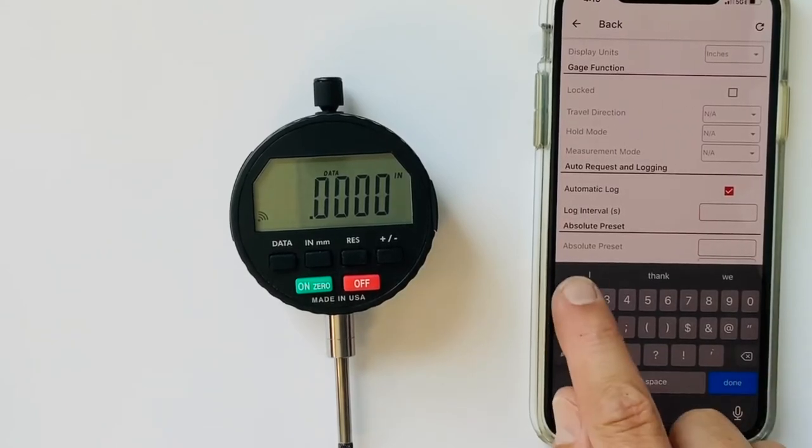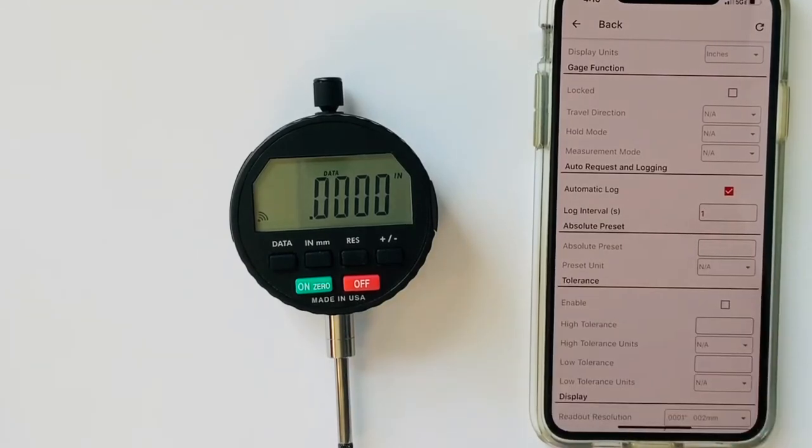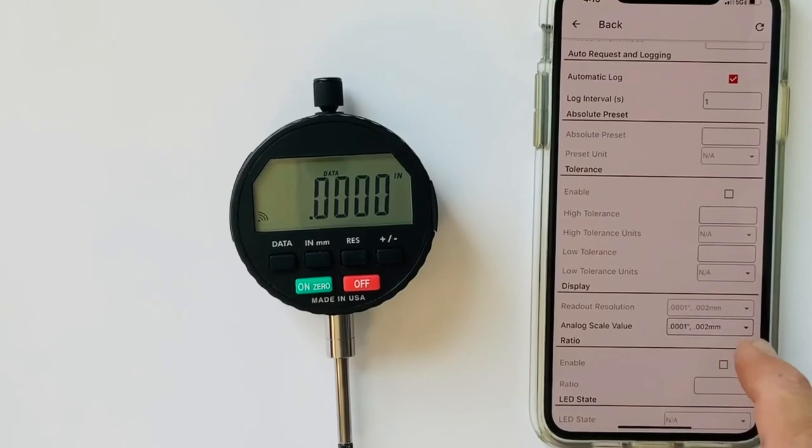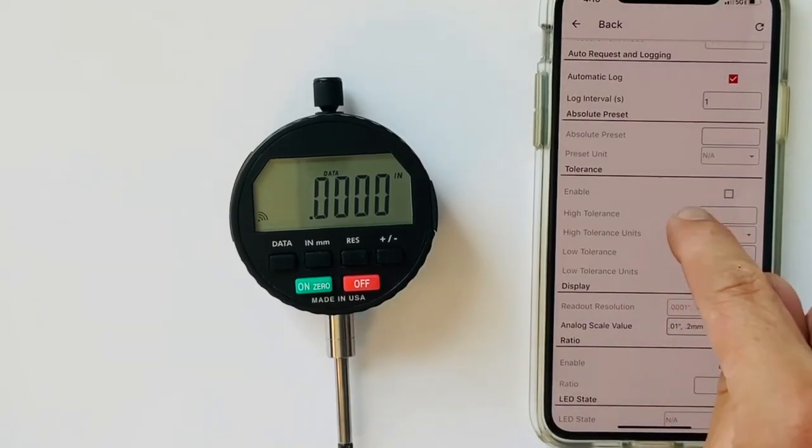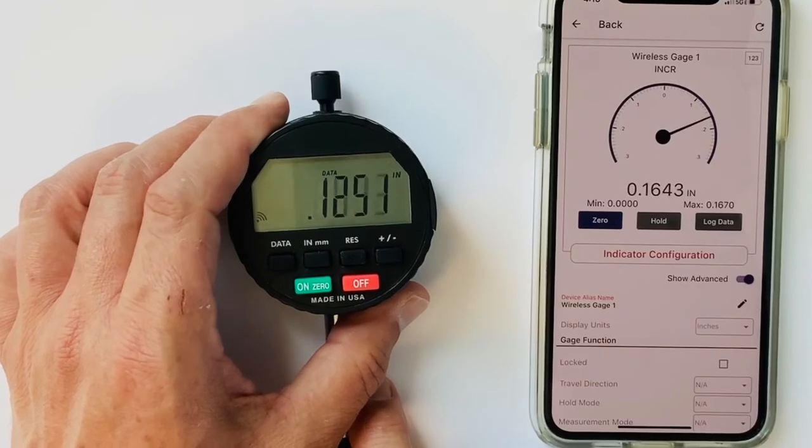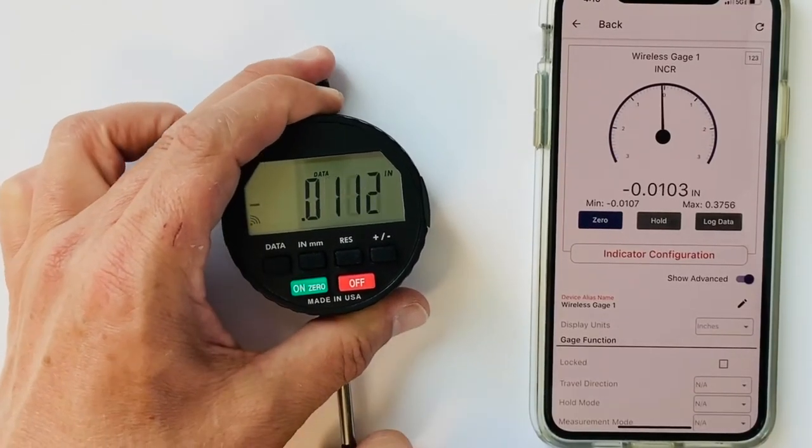We can check the box under automatic log. Set our interval. Let's say we want to record or log one reading per second. I hit one. Hit done. Another thing we can do down here is set my analog scale. Let's check it to a more dramatic 10 thousandths of an inch or 200 micron. And then you can see the scale has changed dramatically to a much coarser scale.